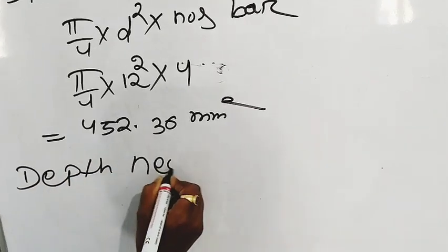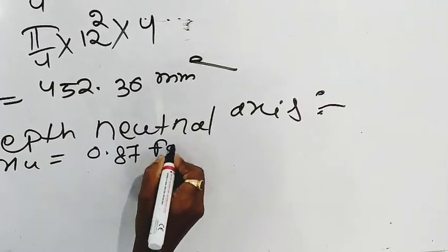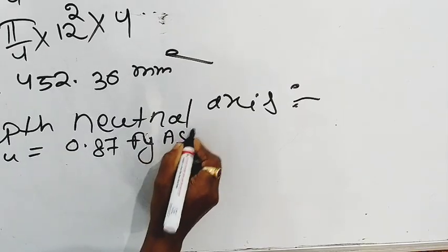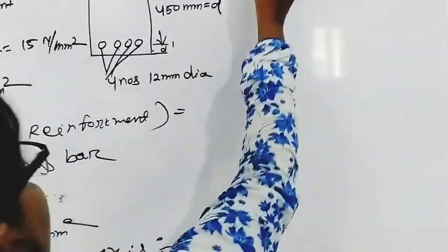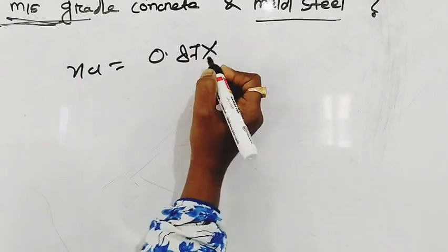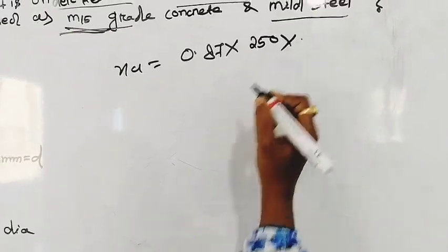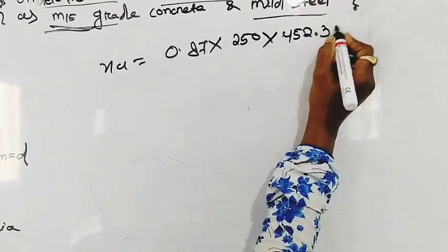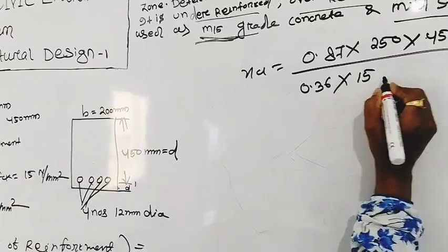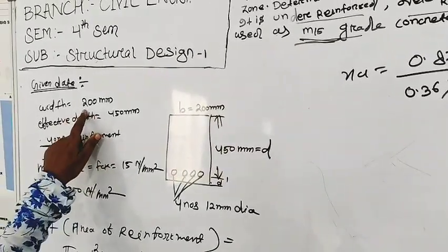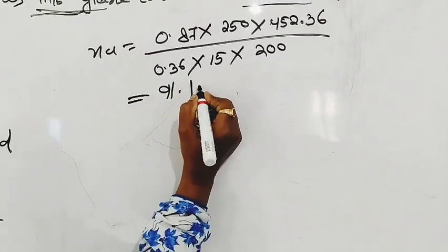Depth of neutral axis, that is XU. The formula is 0.87 FY, AST divided by 0.36 FCK, B. XU equal to 0.87 into FY 250 into AST 452.36 divided by 0.36 into FCK 15 into B 200. The value is 91.1 mm.